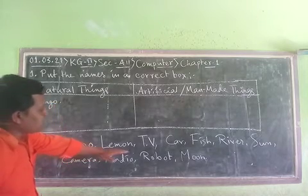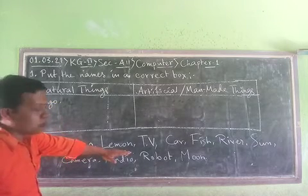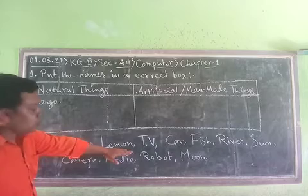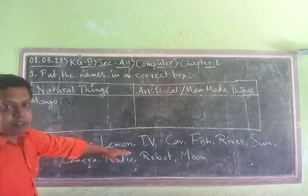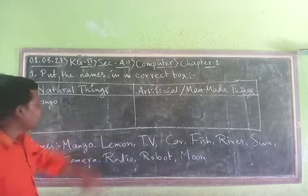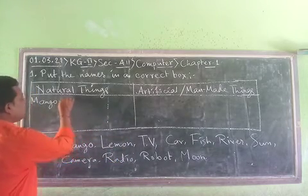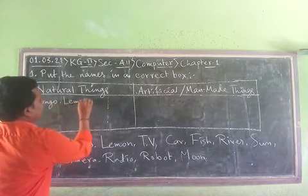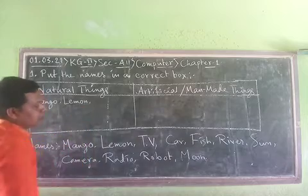Then comes lemon. Lemon is also a fruit — it is a natural thing. We get lemon from a tree, so lemon is also a natural thing.